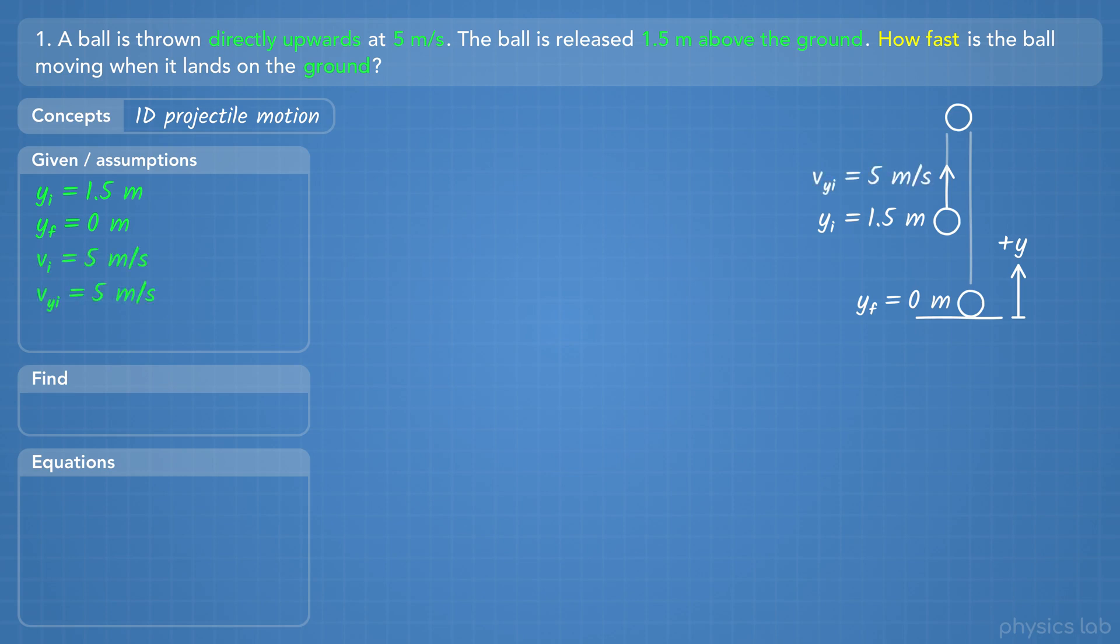The initial velocity is positive 5 meters per second, which is also the initial y velocity because it points in the y direction. The question says how fast is the ball moving when it hits the ground, which means we're looking for the final vertical speed, which is the magnitude, or absolute value, of the velocity.